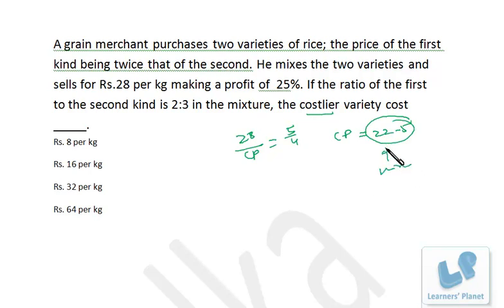That means this should be lying between cost price of costlier variety and cheaper variety - costlier and cheaper - obviously because the price of the mixture will be between costlier variety and cheaper variety. Now don't do anything, just go through the options because there is no 'none of these' and all the data are very simple to calculate.